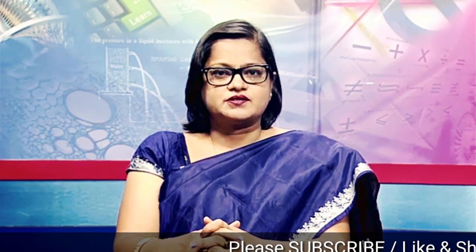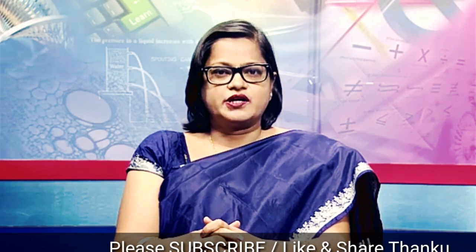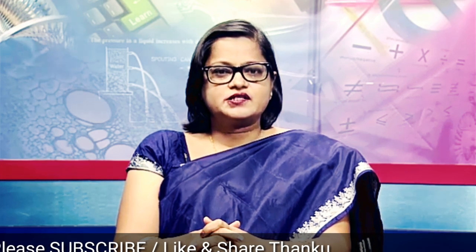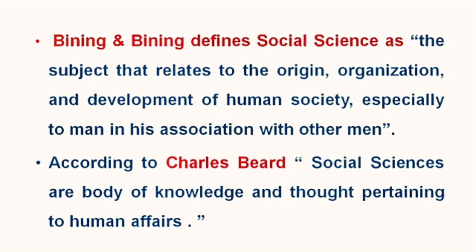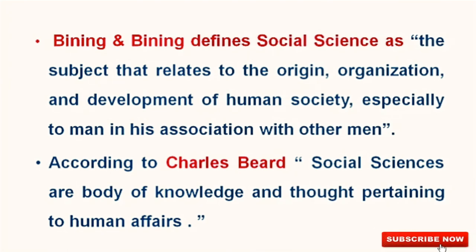Now the question arises, what is social science? Social science is an integral part of school curriculum at all stages of school education. It is a subject of study which offers a systematic study of man in relation to his society. In other words, social science is a generic term covering scientific study of man. Banning and Banning defines social science as the subject that relates to the origin, organization, and development of human society, especially to man in his association with other men. According to Charles Baird, social sciences are a body of knowledge and thought pertaining to human affairs. Any branch of knowledge that deals with social life of man and employs scientific methods for its study may be conceived as social science.